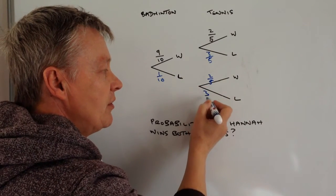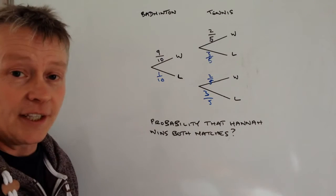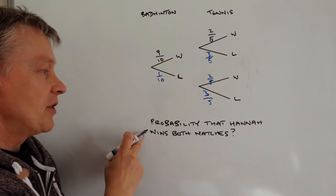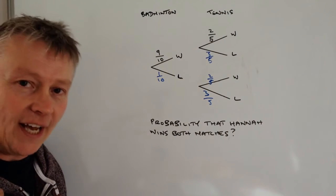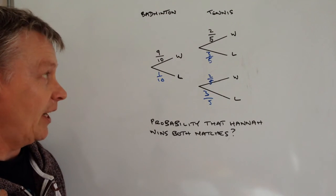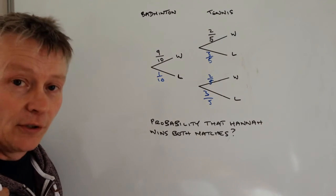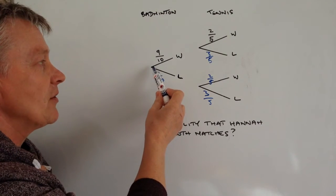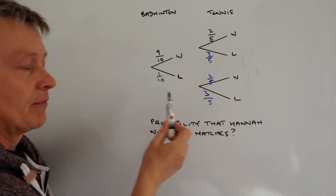Now the reason that we do that is to answer the second part of the question, which is the probability that Hannah wins both matches. The way we do that is we look along the branches themselves and we look at the outcomes.